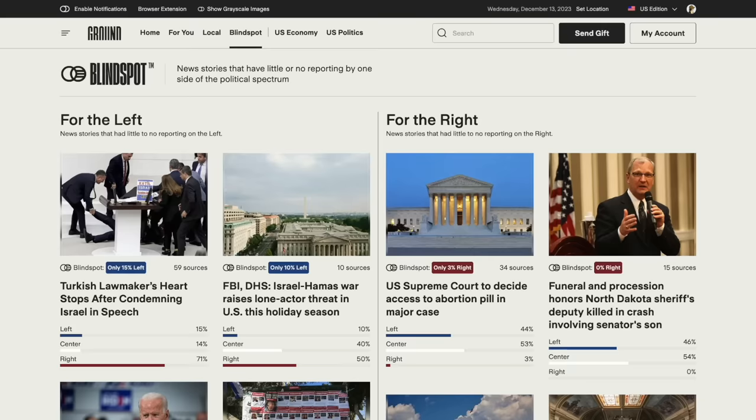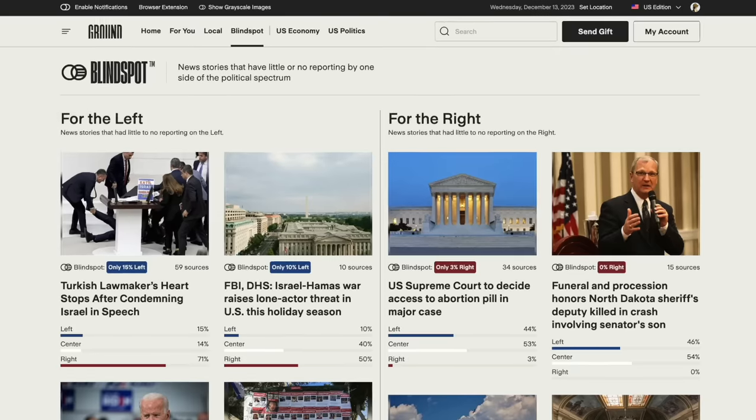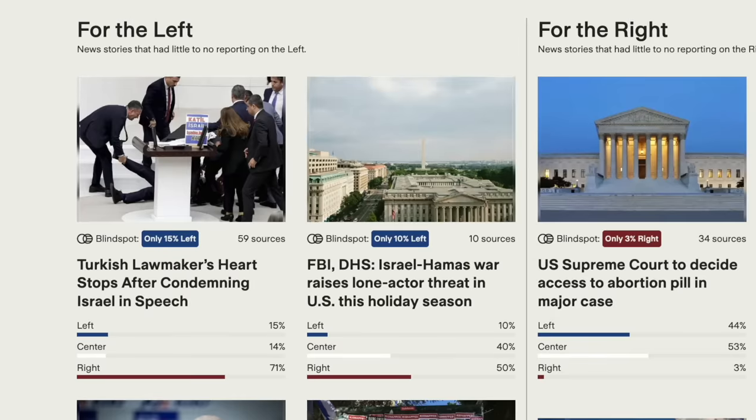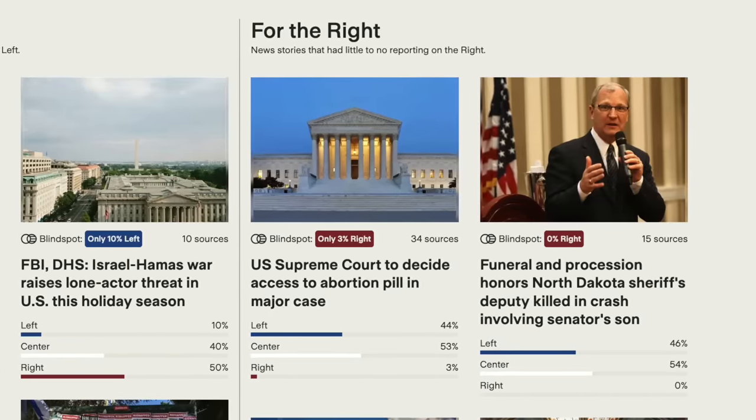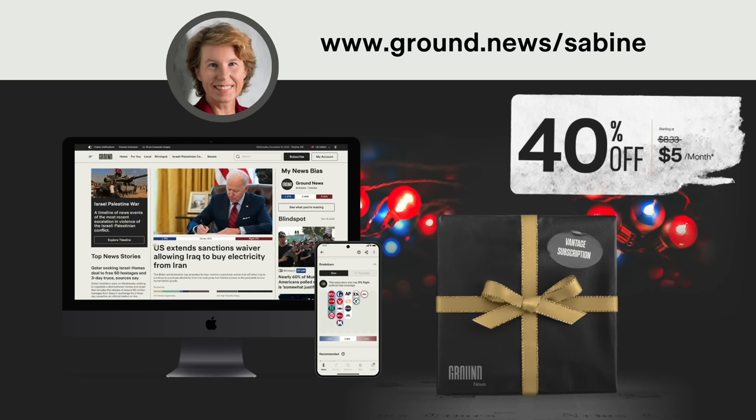They also have this cool feature which they call the blind spot. It highlights stories that have almost exclusively been covered by either the left or the right. Ground News gives me all the context that I need to make sense of the headlines. And best of all, Ground News is currently having their holiday sale. 40% off their vantage plan, which includes unlimited access to all their features. It's their biggest sale of the year, so head to ground.news/sabine or click the link in the video description. This will get you started for only $5 a month and help an independent news platform that's working to make the media landscape more transparent.